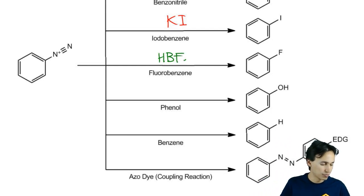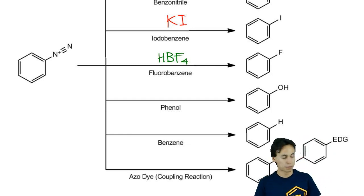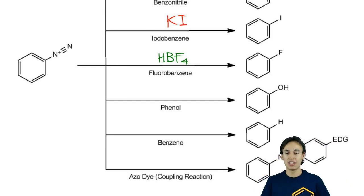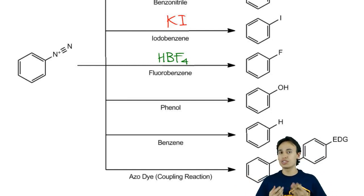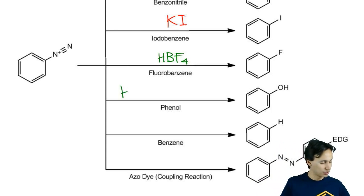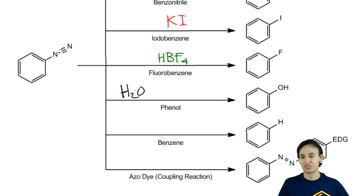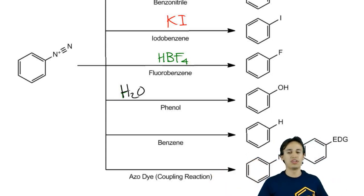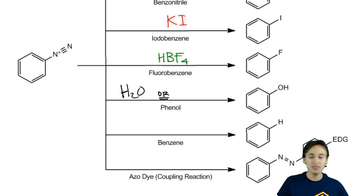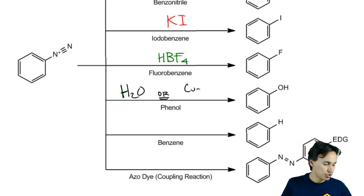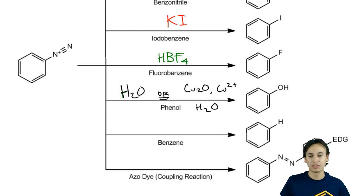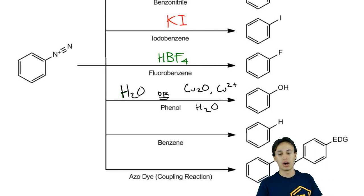Using HBF4, you would make fluorobenzene. Now for phenol, there are actually two ways to make it. The simpler way — which most professors are fine with — is literally just water: react the diazo compound with water and you get phenol. Some textbooks use a more complicated version: Cu2O, Cu2+, and water, which also makes phenol. But most professors accept just water.